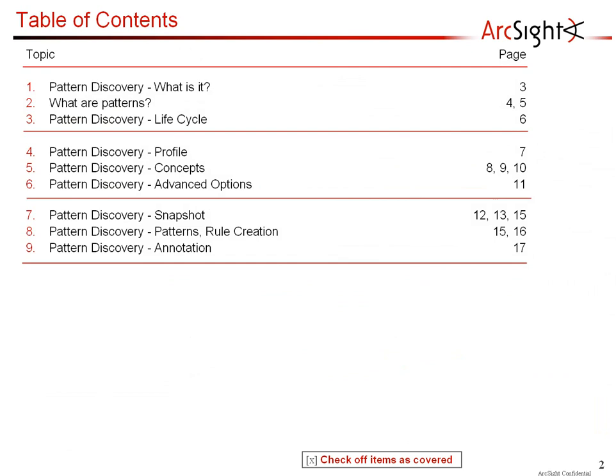The pattern discovery process itself requires you to create what we call a profile. Basically, in the profile, we will determine how to identify the patterns in the event stream. We will also learn about the concepts behind the creation of the profile as well as advanced options. Once the patterns are discovered, how we can use those patterns and convert them into ArcSight rules, as well as annotating those patterns to identify the normal behavior of your network as well as identifying zero-day attacks.